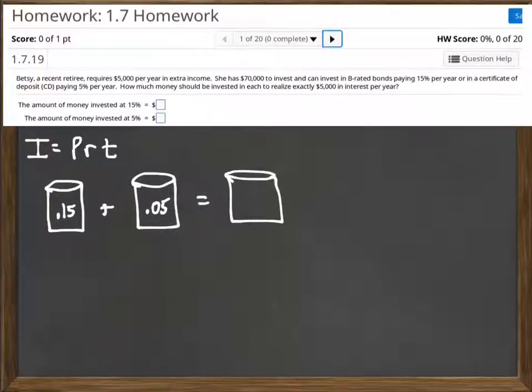Now, across the top I'm going to write how much I have, which is $70,000. Now, I need $5,000 in interest. There is no interest rate, although if you wanted to, you could take $5,000 divided by $70,000 to get an average interest rate. But there's just nothing that goes there.